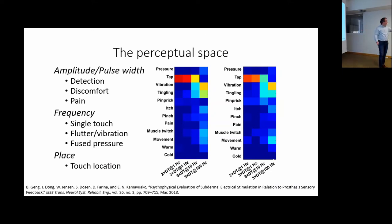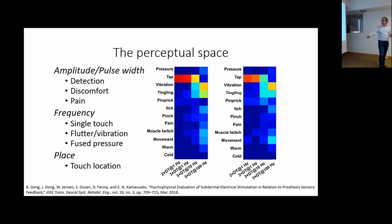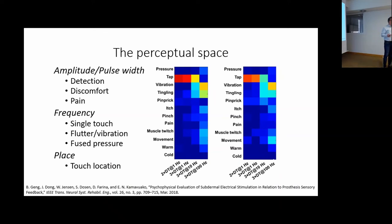Regarding frequency — the rate of pulses delivered to the skin — if you deliver a single pulse, you feel touch, this electrical touch, which at small amplitude can be quite natural. If you increase the frequency of pulses, you feel something like a flutter on the skin or vibration. And finally, if you go even higher, all these individual pulses fuse at the level of the brain and you elicit a sensation of fused pressure — a superficial pressure on the skin. So we can modulate the quality of electrical stimulation through frequency.